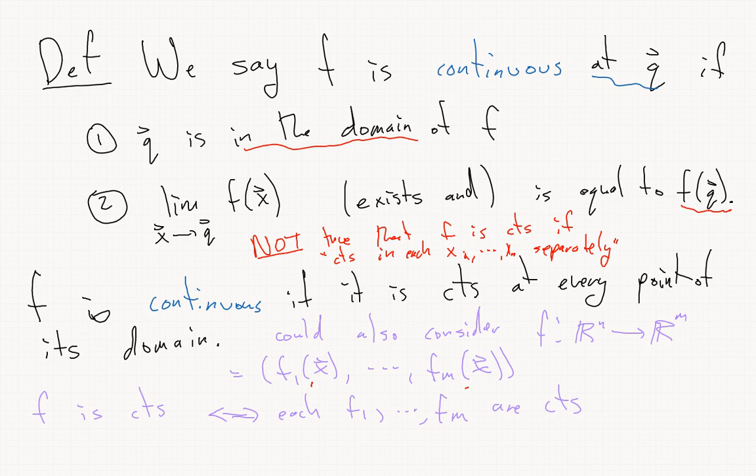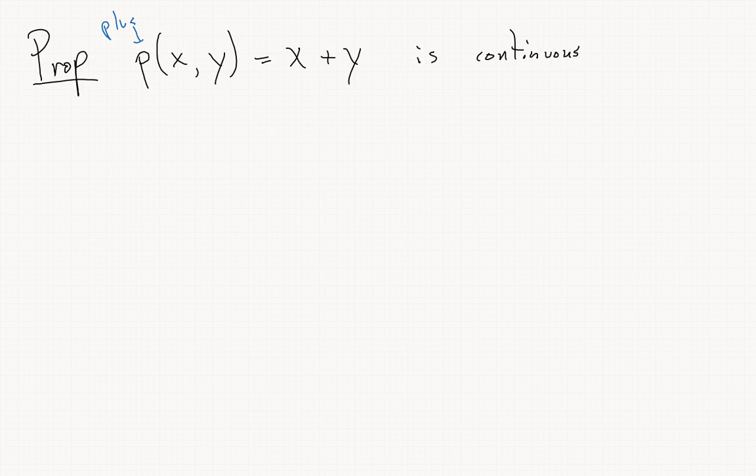As an example of working with this definition, I'm going to define p(x,y), where p is for plus, as x plus y, and I want to show that this is continuous on all of R^2.